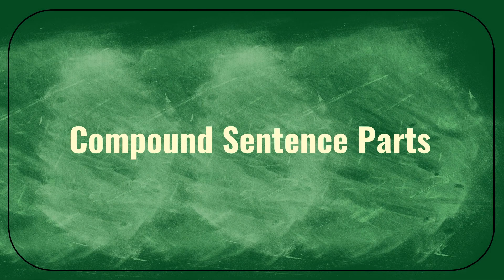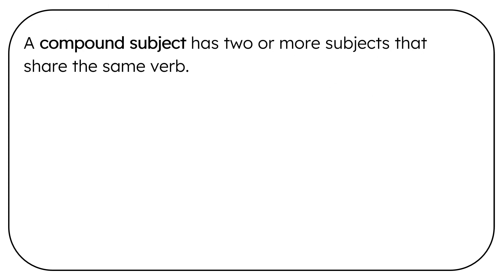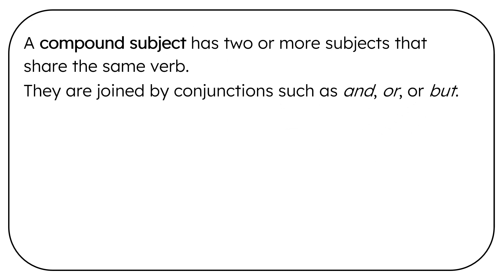Compound sentence parts. A compound subject has two or more subjects that share the same verb. They are joined by conjunctions such as and, or, or but.